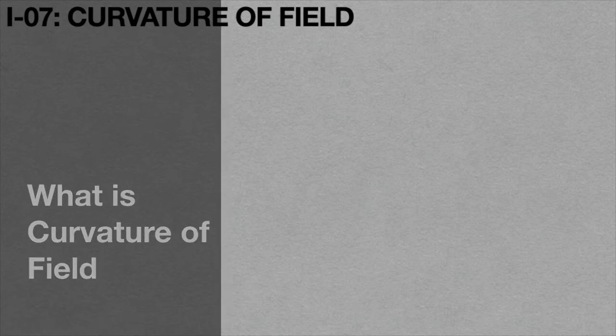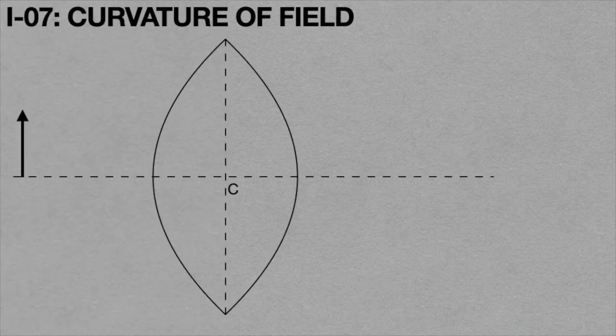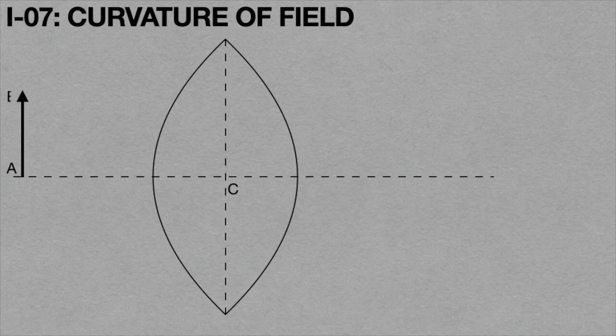So what is Curvature of Field? When a straight line object is placed on the principal axis of a thin lens, then its image is not formed as a straight line on the other side of the lens.